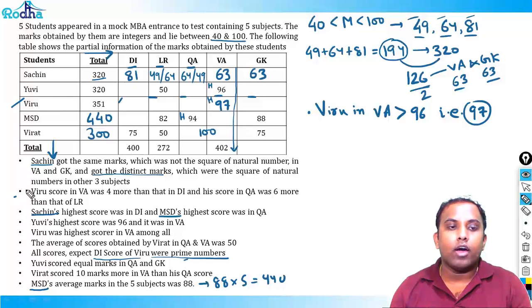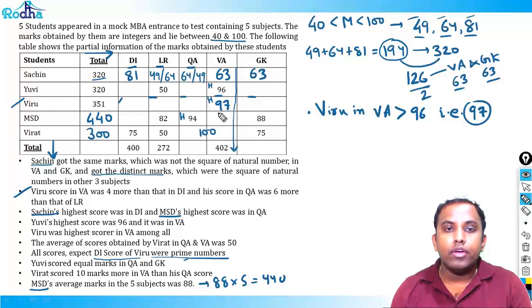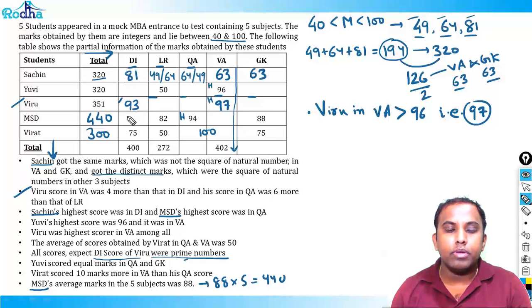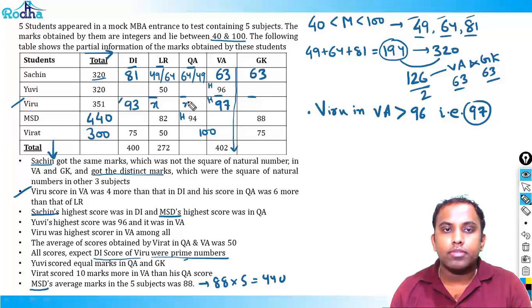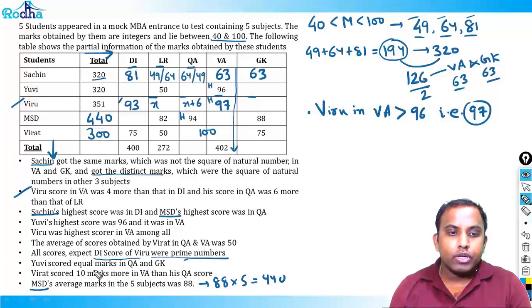Viru's score in VA was 4 more than in DI, and VA = 97, so DI = 93. His QA score was 6 more than LR. Let LR = x, so QA = x + 6. We don't know x yet.